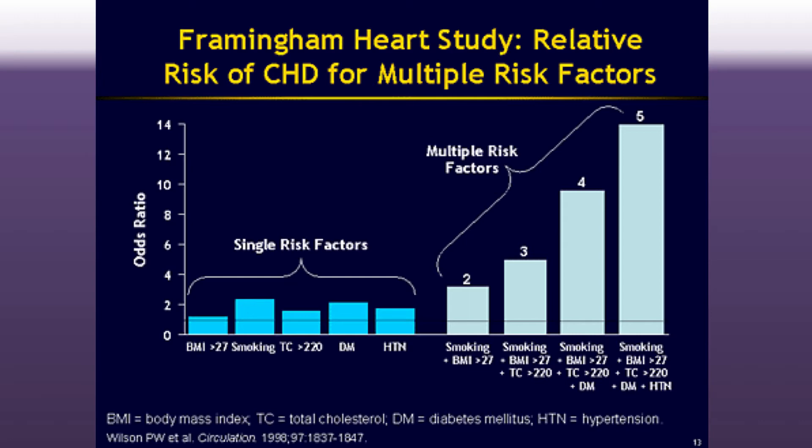As public health workers, if we can identify that there's a specific group of people or a certain population that has many of these different risk factors together, then we know that they're much more likely to develop a disease and we can target more of our resources to them. It's a helpful strategy for thinking about intervention development.